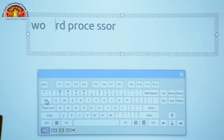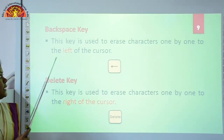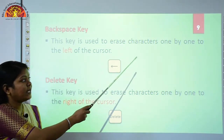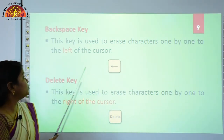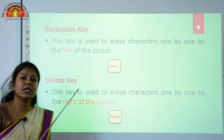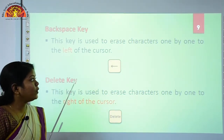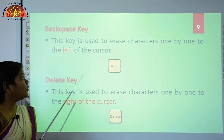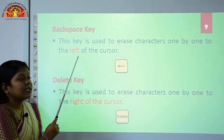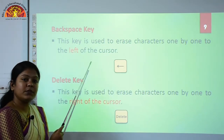Now we will move to our next special key. The next special key is the Backspace key. This key is used to erase characters one by one to the left of the cursor. You have to place the cursor at the position where you want to erase the character. The Backspace key erases the character from the left side of the cursor.